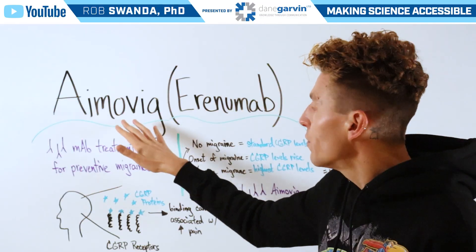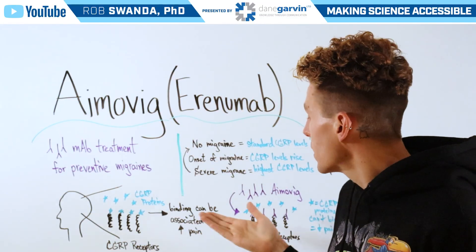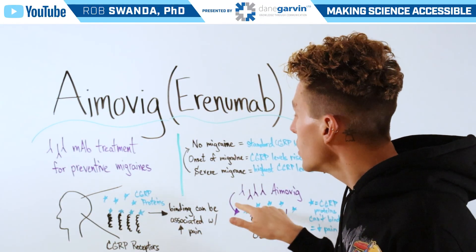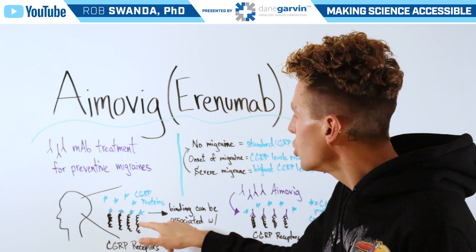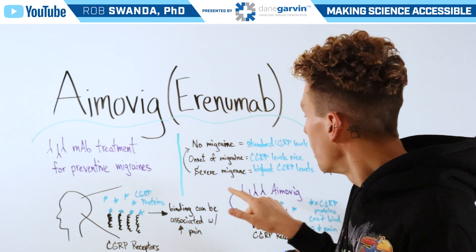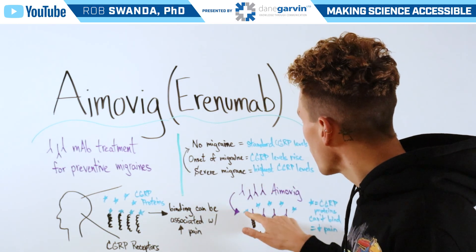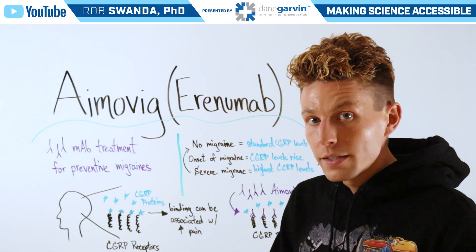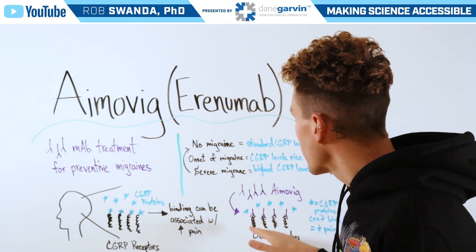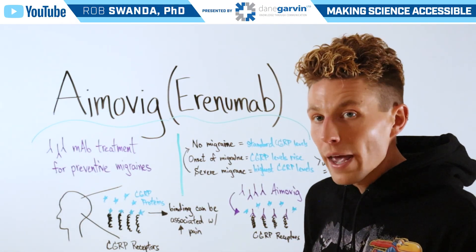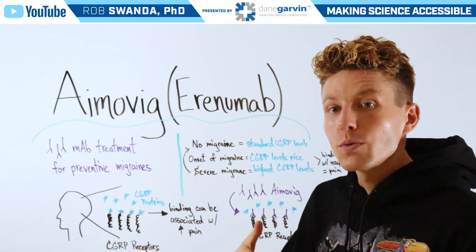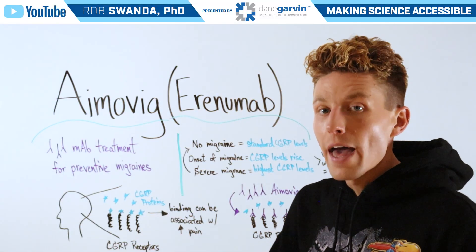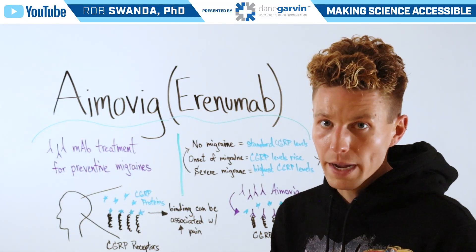When Amovig is used as a treatment, it's a monoclonal antibody that can actually bind to the CGRP receptors, blocking the CGRP proteins from coming in and forming that bond. Therefore, with the monoclonal antibody in the way, that protein can't interact with the receptor, so there's a decrease in the amount of head pain that can lead to a migraine.